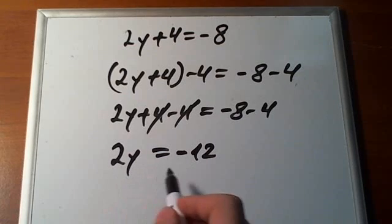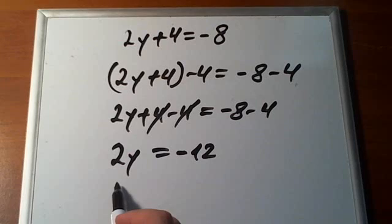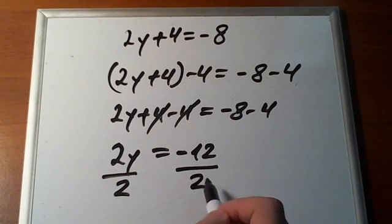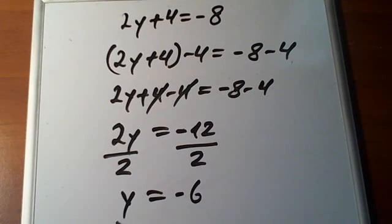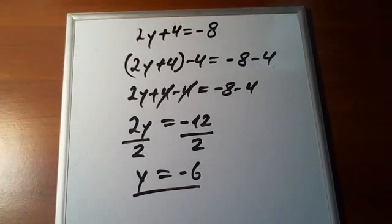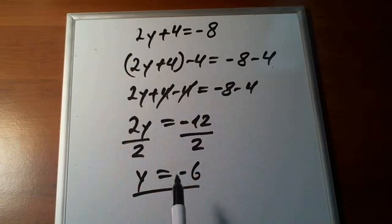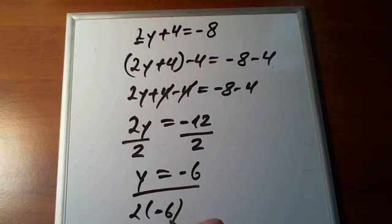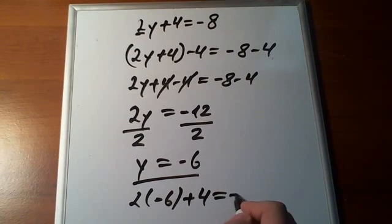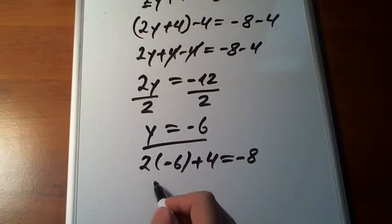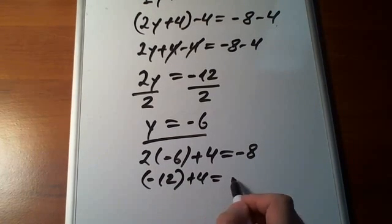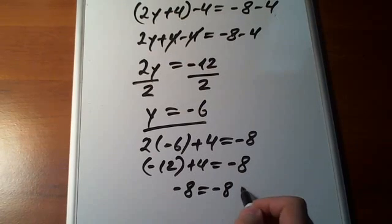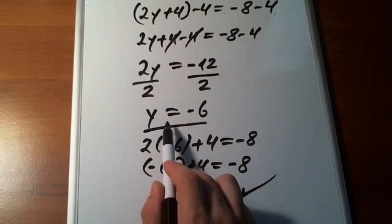Now, 2y is equal to minus 12, but we need to find what y equals. In order to do that, we divide both sides by 2, and we get y is equal to minus 6. We can plug minus 6 into the original equation to check: 2 times minus 6 plus 4 has to equal minus 8. 2 times minus 6 is minus 12, and minus 12 plus 4 is indeed negative 8. So y is equal to minus 6 is our solution.